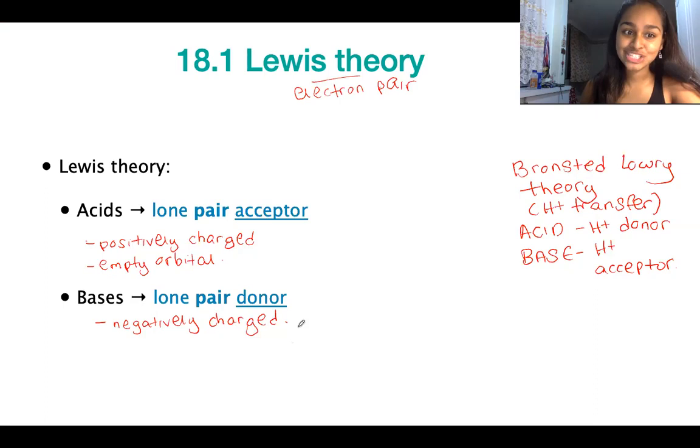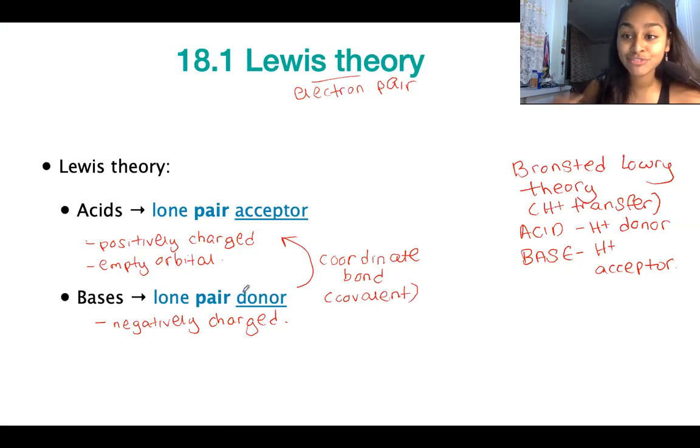So they're going to be negatively charged. And as the base is going to give the lone pair to the acid, what we're going to get is the formation of a coordinate bond. So a coordinate bond is a type of covalent bond, whereby one species is responsible for both of the electrons in the bond. So here, both of the electrons are going to come from the base, and they're going to get transferred over to the acid.